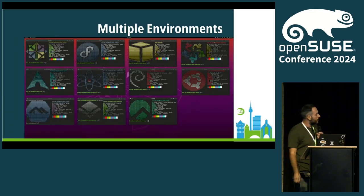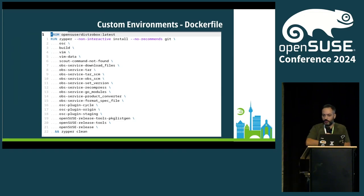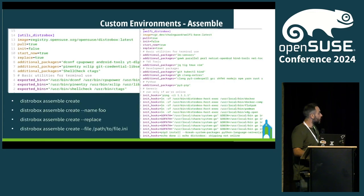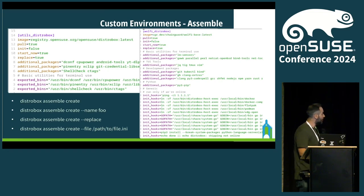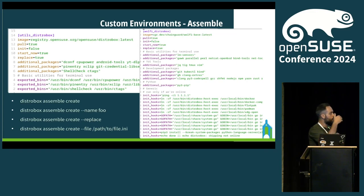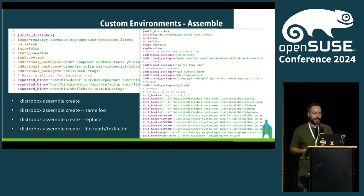You can create your own images with Dockerfile — they're normal containers. Or you can create assembly manifests. They are simple INI-style key-value manifests where you can declare multiple boxes with packages, commands to run at init, and so on, so that you can have a pre-made environment ready to go.